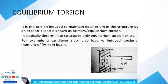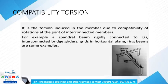Secondary torsion is required to satisfy the compatibility condition between members. Examples include: spandrel beams rigidly connected to cross sections, interconnected bridge girders, grids in horizontal plane, and ring beams. This involves the compatibility of rotation of the joint of interconnected members.